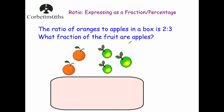I've drawn two oranges and three apples because the ratio of oranges to apples is two to three, so for every two oranges there's three apples. Looking at the fruit we can clearly see there's five pieces of fruit, so we put five on the denominator. There are three apples, so the fraction of the fruit that are apples is three fifths — five pieces altogether and three are apples.